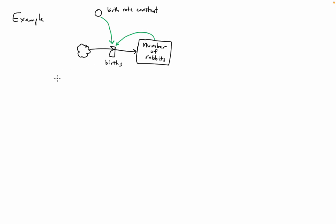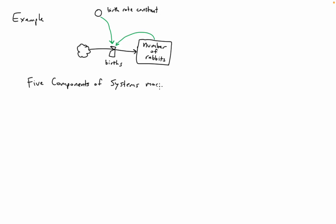I'm drawing this example to help illustrate that there are actually five components — or five different types of components — that could appear in one of these diagrams. This diagram has all five.